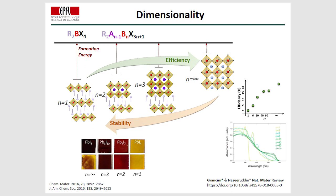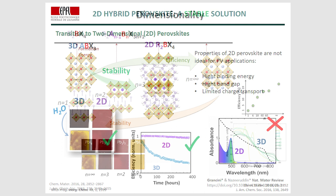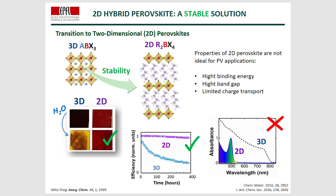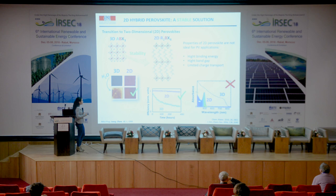We know that devices based on 3D perovskite are very efficient, but they are not so stable. On the other side, the 2D perovskites are very stable, as we can see here. However, the transition to 2D perovskite is not straightforward, because we cannot simply prepare photovoltaic devices with 2D materials — they do not present good photovoltaic properties, as they exhibit high exciton binding energy, high band gap, and limited charge transport due to the large organic cations. The absorption of 2D is very narrow, but the stability is very long when samples are exposed to water or other conditions.